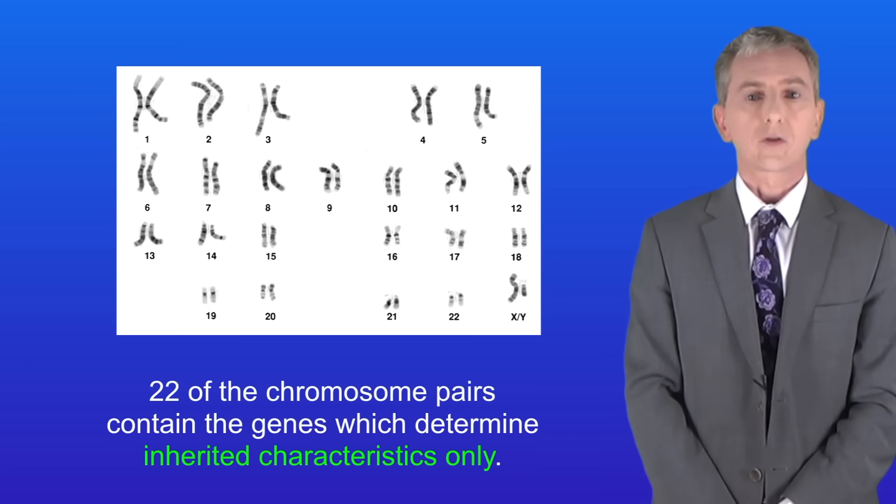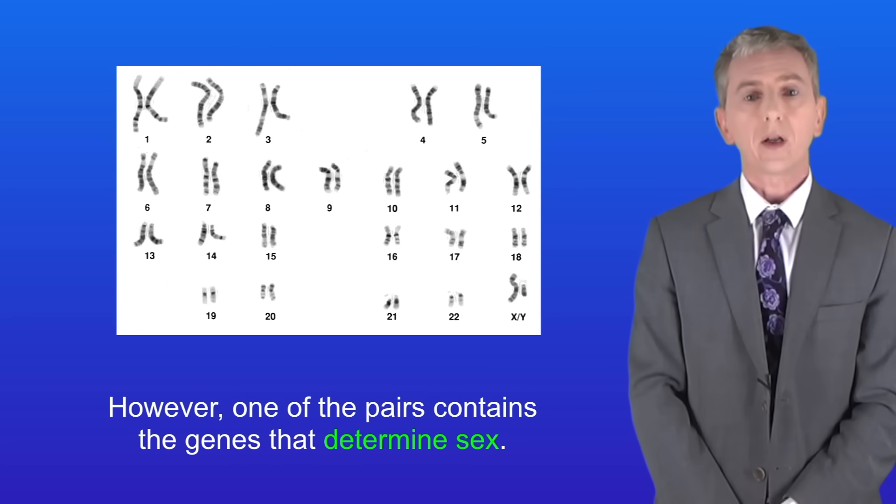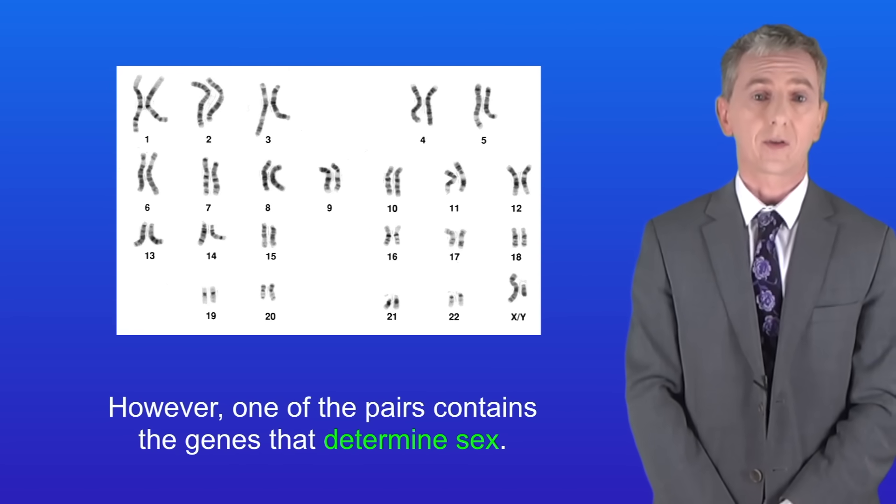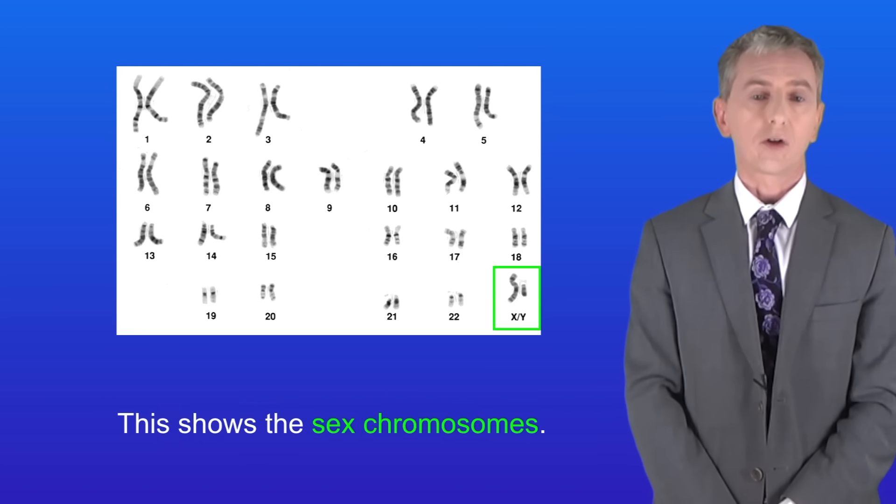Now 22 of the chromosome pairs contain the genes which determine inherited characteristics only. However one of the pairs contains the genes that determine sex. And I'm showing the sex chromosomes here.